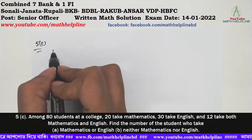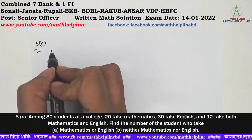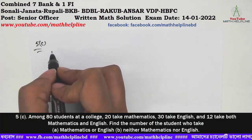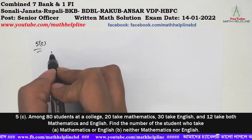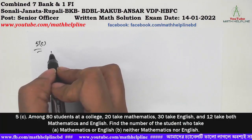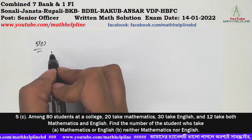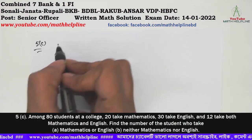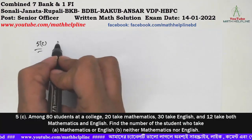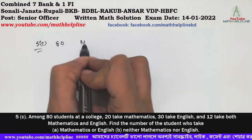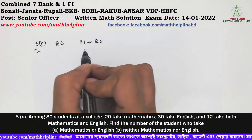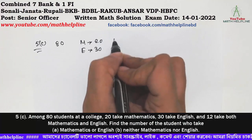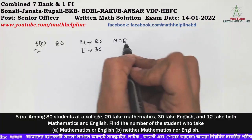Problem 5B: Among 80 students at a college, 20 take mathematics, 30 take English, and 12 take both mathematics and English. Find the number of students who take mathematics or English, and the number who take neither mathematics nor English.